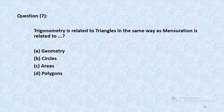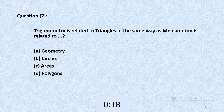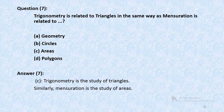Question 7: Trigonometry is related to triangles in the same way as mensuration is related to — geometry, circles, areas, or polygons? The answer is C. Trigonometry is the study of triangles; similarly, mensuration is the study of areas.